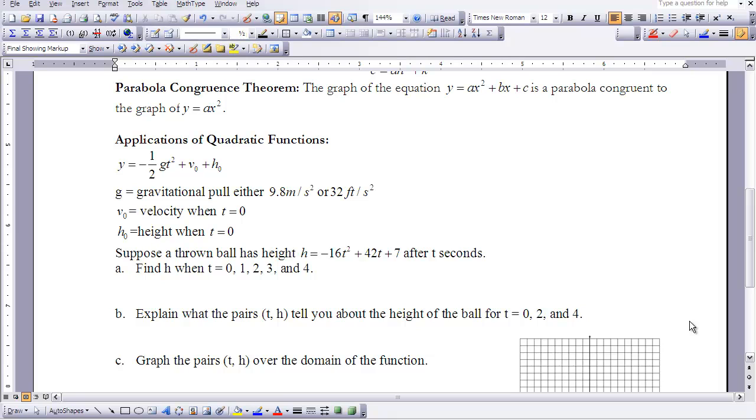So we're also going to explore how the graph of an equation of y equals ax squared plus bx plus c is just a parabola congruent to the graph of y equals ax squared also, since a graph in standard form and vertex form is still the same parabola, just in a different format. We're going to look at applying these quadratic functions, and one equation that we're going to be using is y equals negative one-half g times t squared plus the initial velocity plus your initial height.